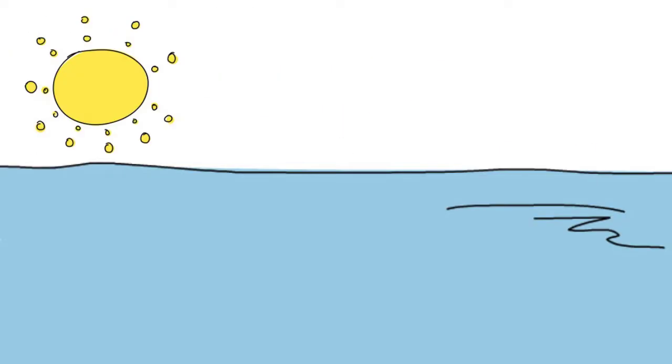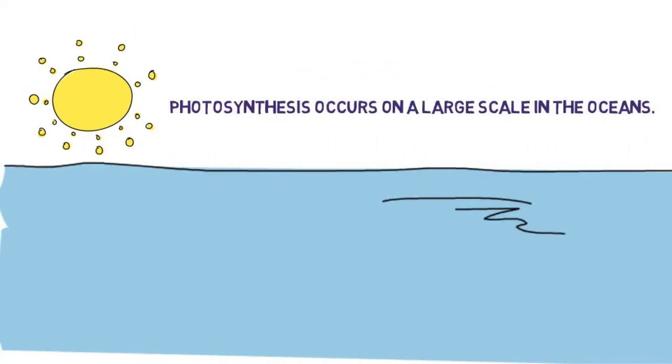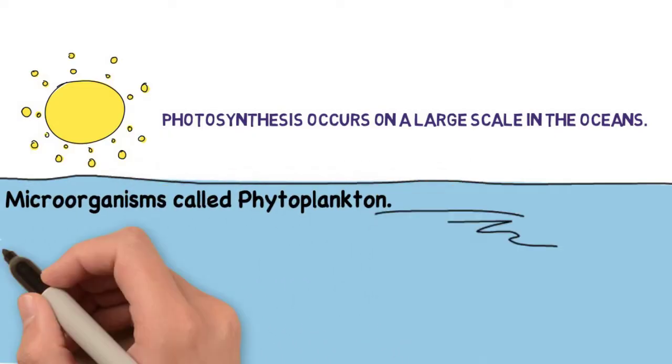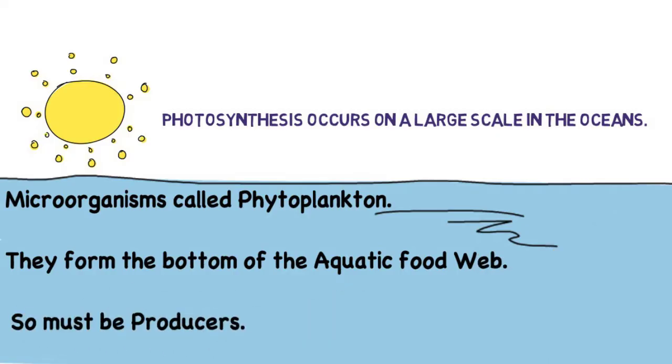It's very important to recognize that photosynthesis is not just happening on land. It's happening on a huge scale in the oceans, where CO2 is being used by these microorganisms known as phytoplankton. They form the bottom of the aquatic food web. They are the producers.